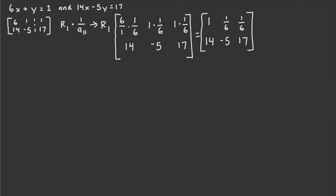The next thing we have to do is convert A21, which is this 14, into a 0. We're going to use a formula to do this — the same formula. So we're going to have the opposite of whatever we're trying to convert, which is A21, plus R2, and we're going to put the result of this calculation into row 2. Let's do that step by step to keep it very understandable.